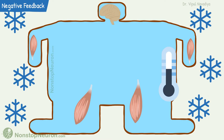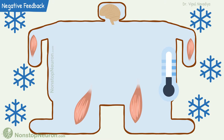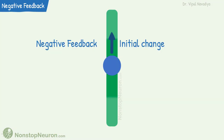Then it sends the signal to the sweat glands to sweat. The sweating brings the body temperature back to normal. On the other hand, if there is decrease in body temperature, the brain signals muscles to shiver. This generates heat and again brings the body temperature back to normal. Thus, negative feedback counteracts the initial change.